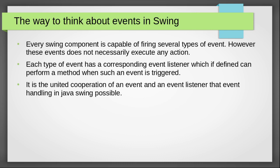Every Swing component — such as JButton, JTextField, JComboBox, JFrame, JPanel, and even JLabel — is capable of firing several types of events. However, these events do not necessarily execute any action until you want to do something about it. Each type of event has a corresponding event listener which, if defined, can perform a method when such an event is triggered. It is the cooperation of an event and an event listener that makes event handling in Java Swing possible.